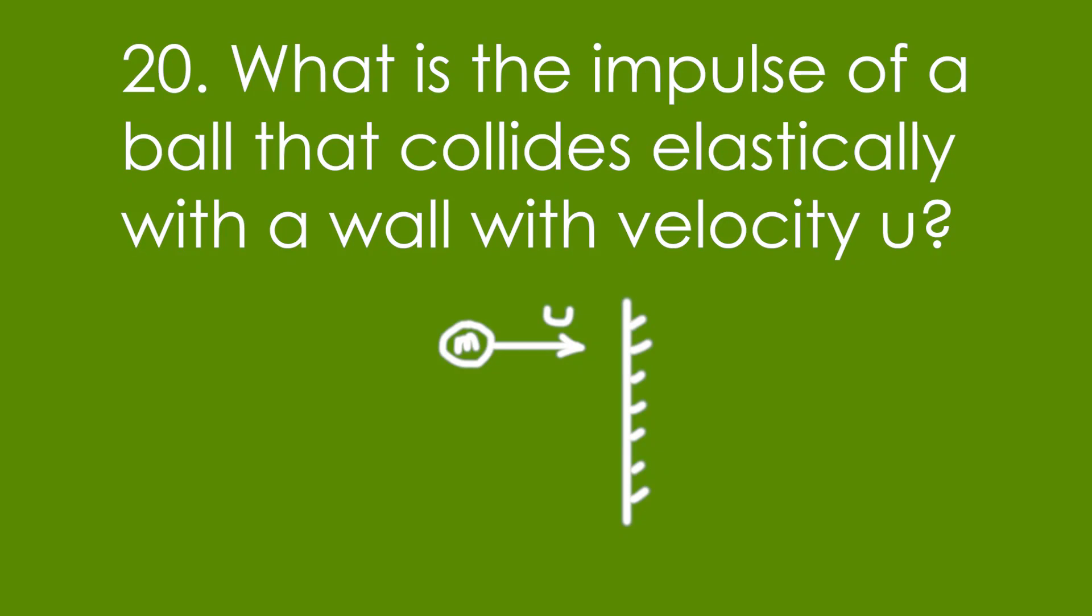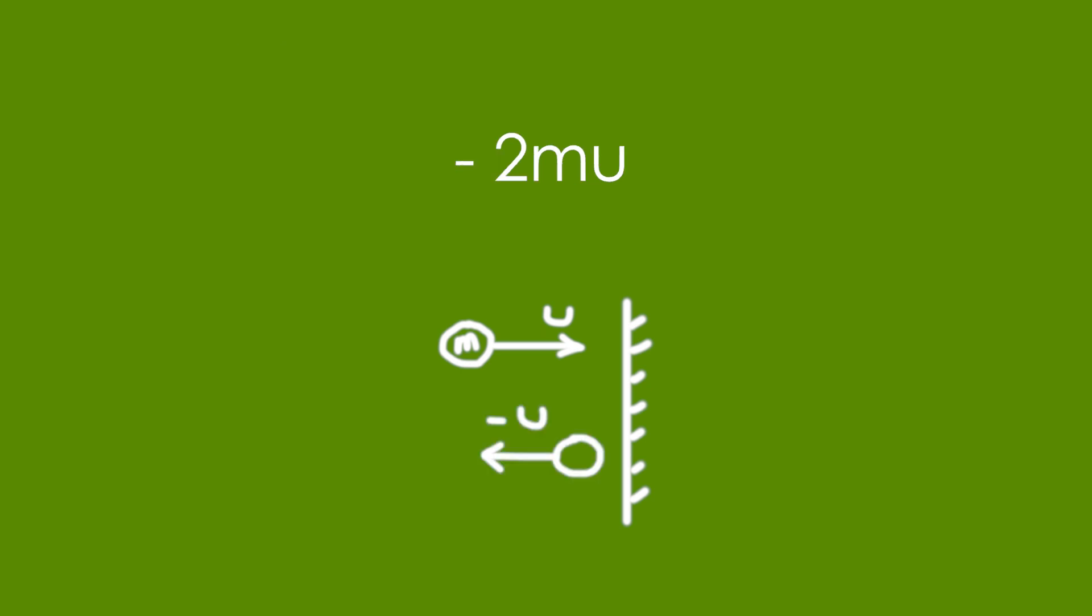20. What is the impulse of a ball that collides elastically with a wall with velocity u? It's minus 2mu because it's going from plus mu to minus mu because it's going the opposite direction. So the overall change in momentum is minus 2mu.